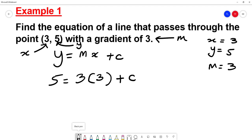So we're substituting the values into the equation. So now we get 5 = 3 × 3, which is 9, plus C.